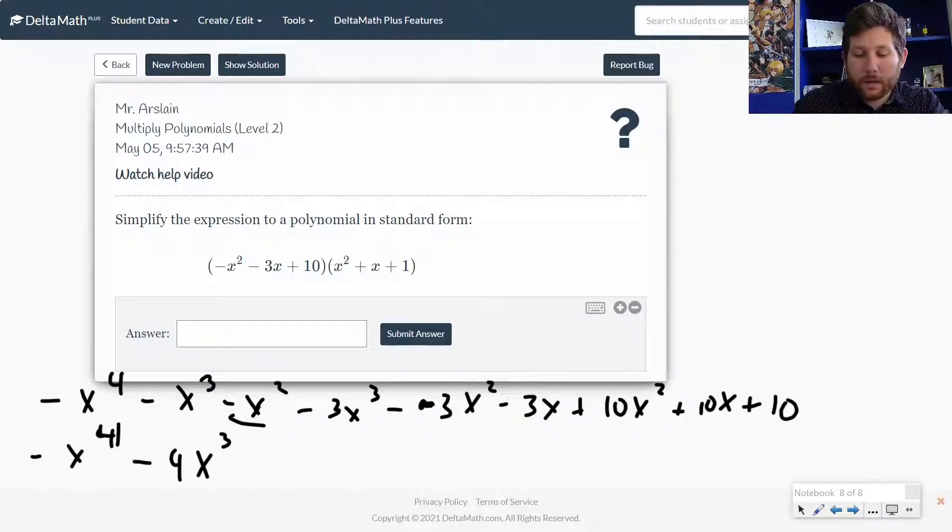So I've got minus x minus 3x plus 10x, so that's going to be plus 6x squared. I'm sorry, minus x squared minus 3x squared plus 10x squared,